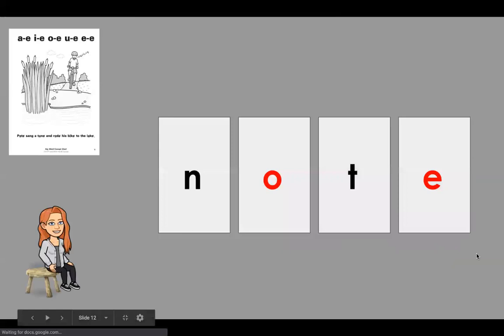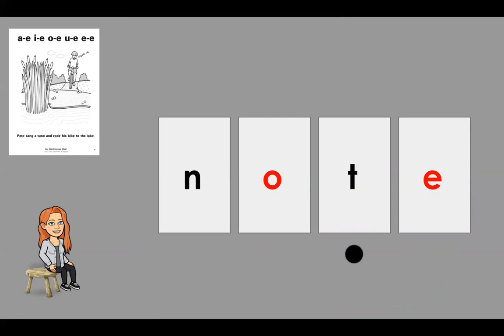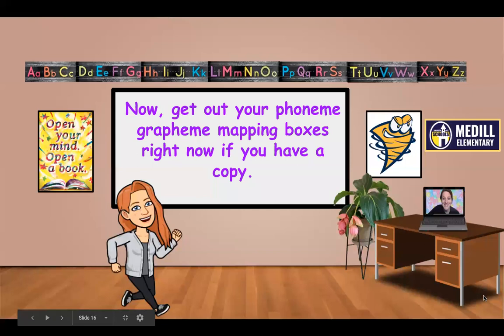Here's an example. Let's sound this word out. We have N. Now we know that we have to say oh instead of ah, because there's that silent bossy E at the end. T. So the word is note. Now get out your phoneme-grapheme mapping boxes, if you have a copy of them.